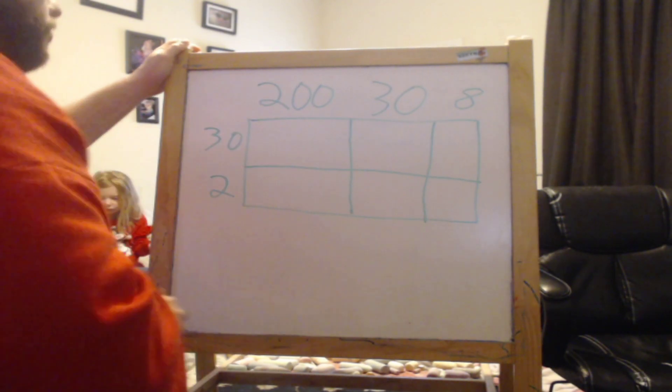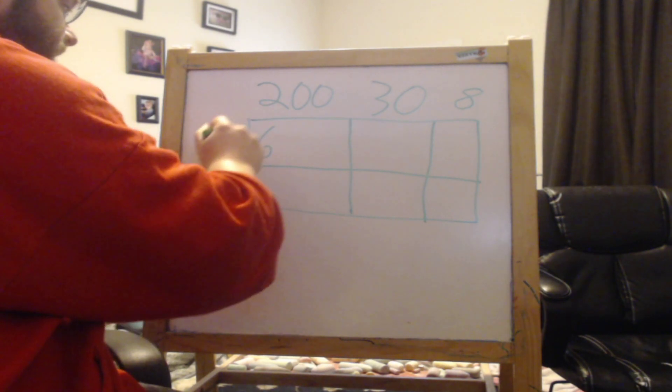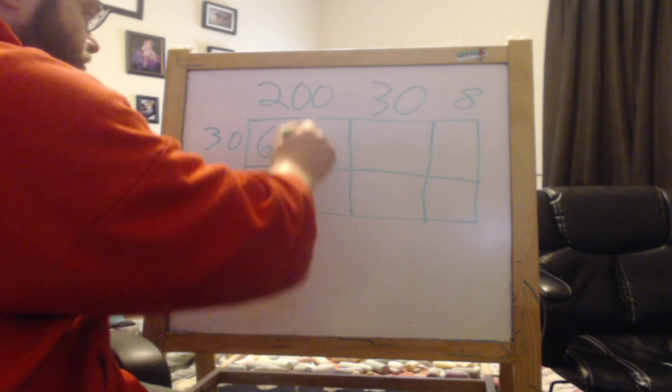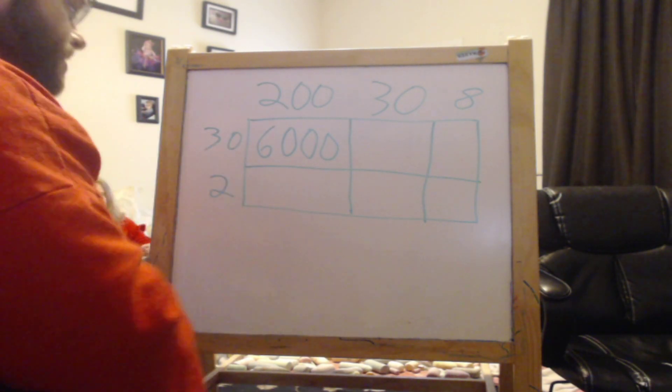So 200 times 30. 2 times 3 is 6, and then I have to add the zeros, right? 3 zeros: 1, 2, 3. Because there's 2 zeros here, 1 here. We're at 6,000.